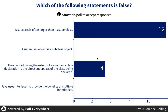And D: Java uses interfaces to provide the benefits of multiple inheritance — that's true, and we'll talk about interfaces later. So B is the one — a superclass object is the subclass object — they can't be both. That's the most wrong one. If you ever see this on a test, you know the answer. Let's go to the next one.